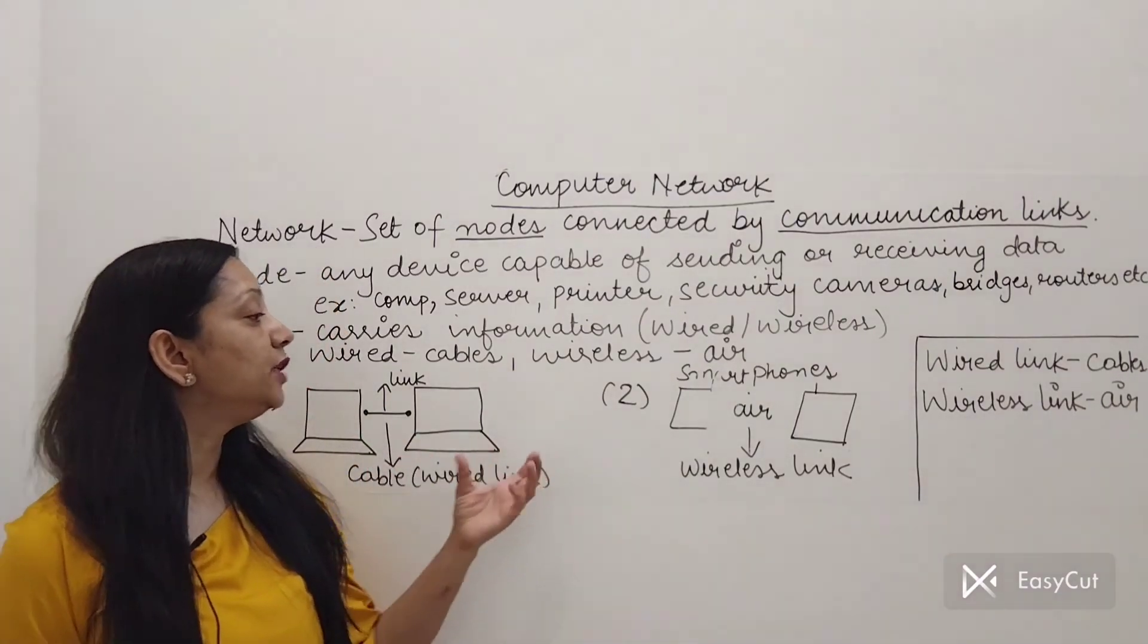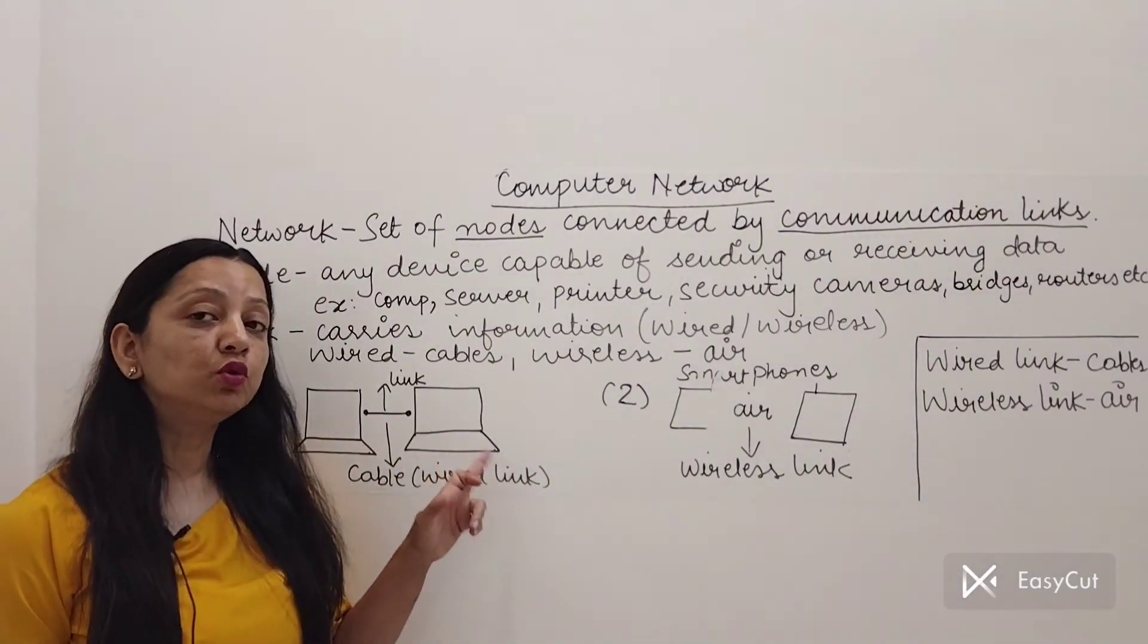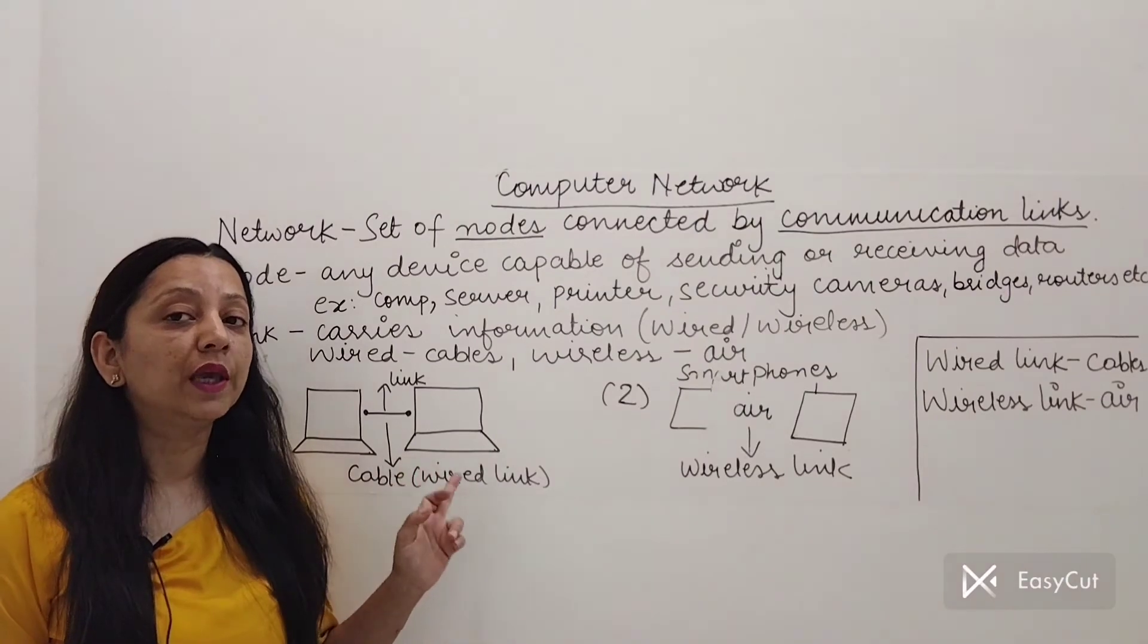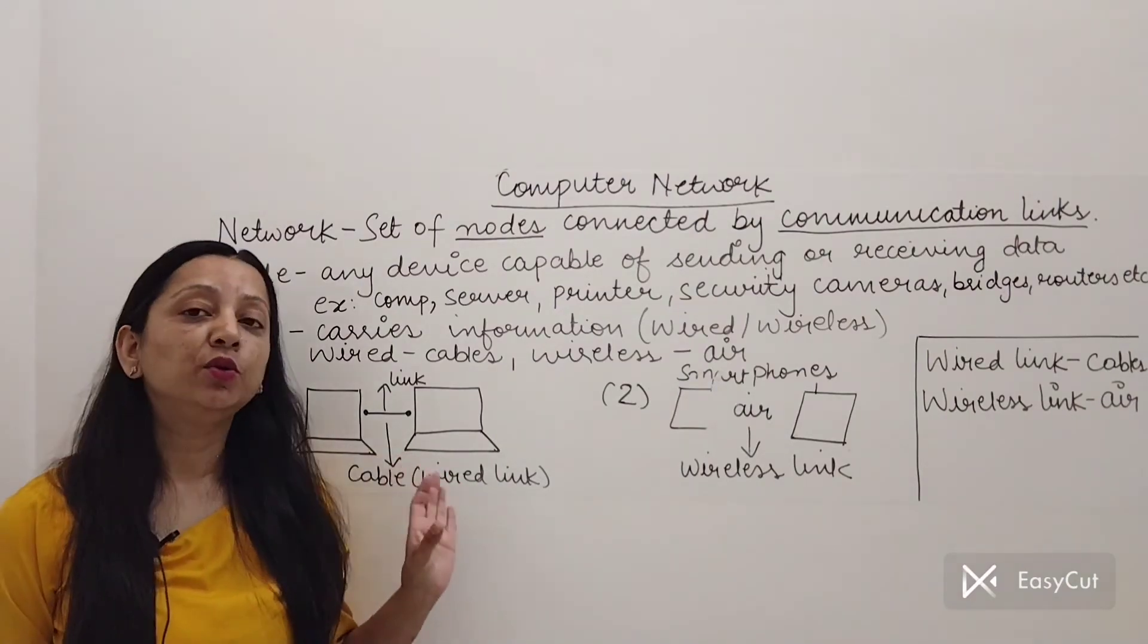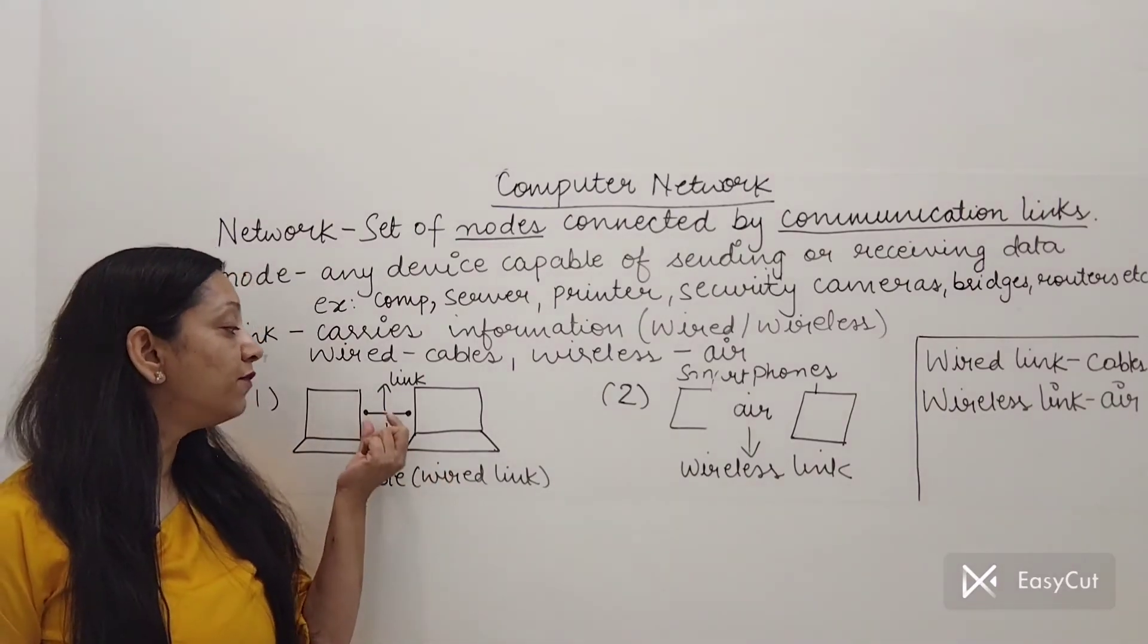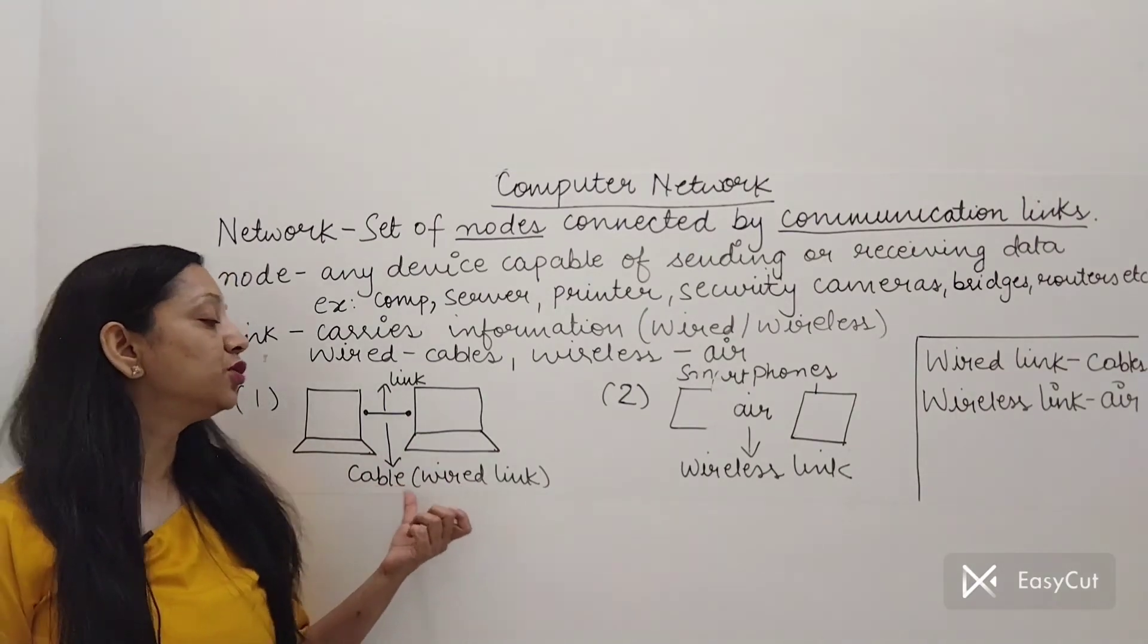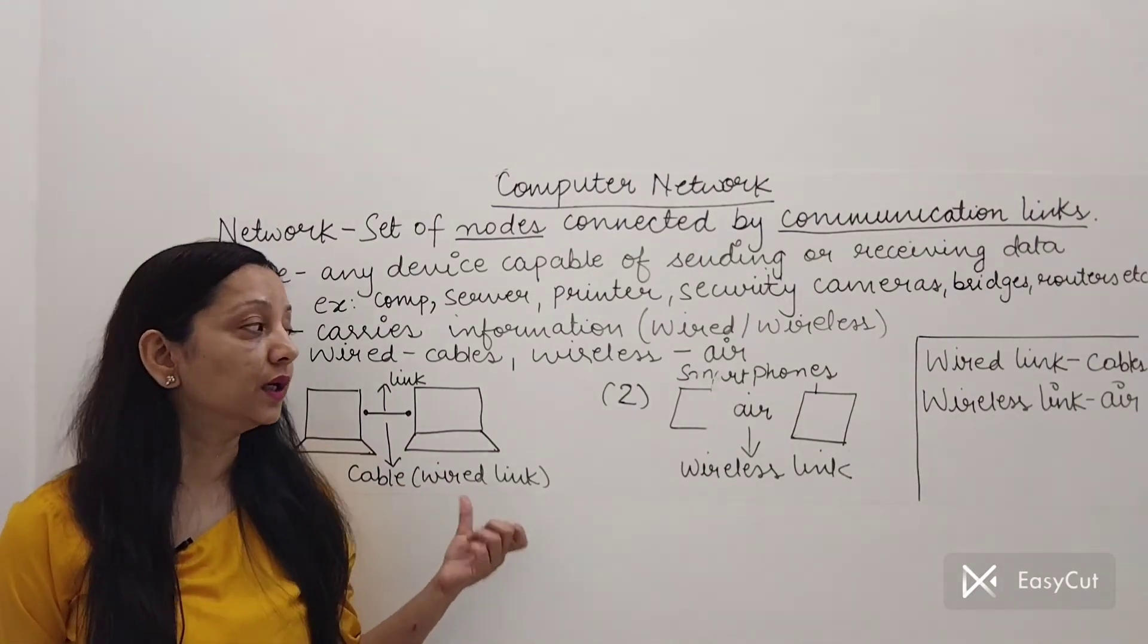Now we will see two examples of both the types of links. Here you can see there are two computers which are connected through a cable. It is a physical wire you can see here which is also known as a cable. So since a physical medium is used or a physical link is used between two nodes, so it is known as a wired link.